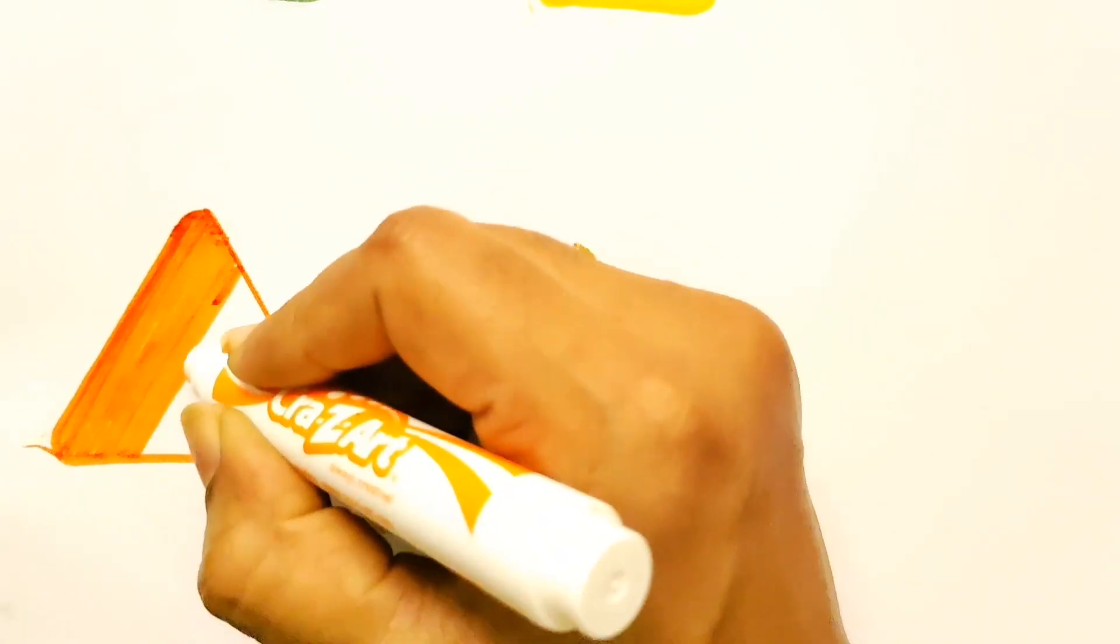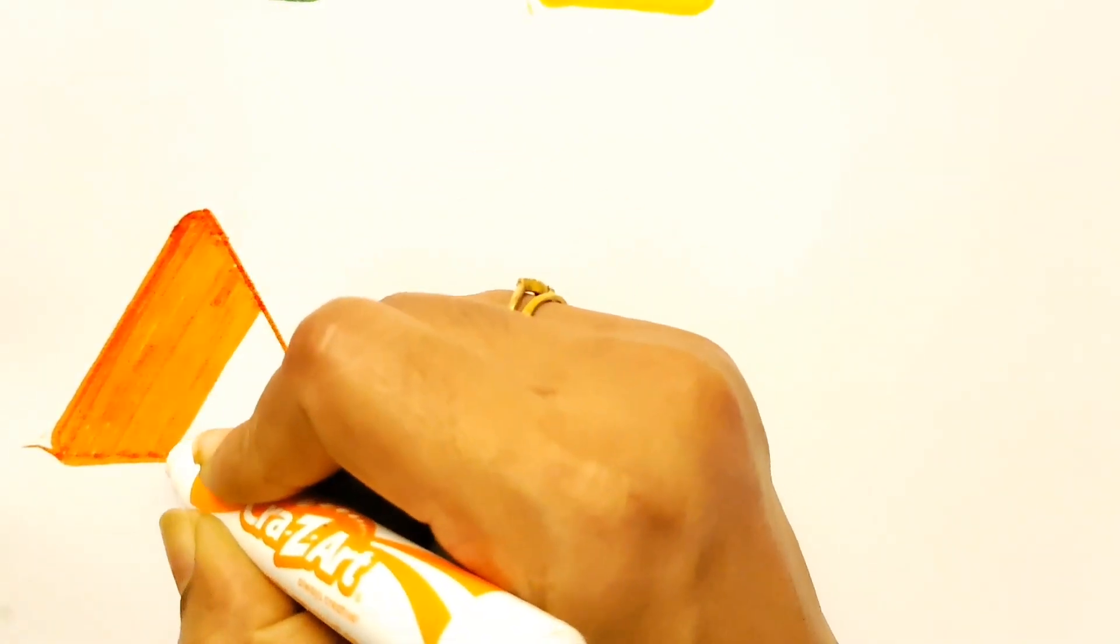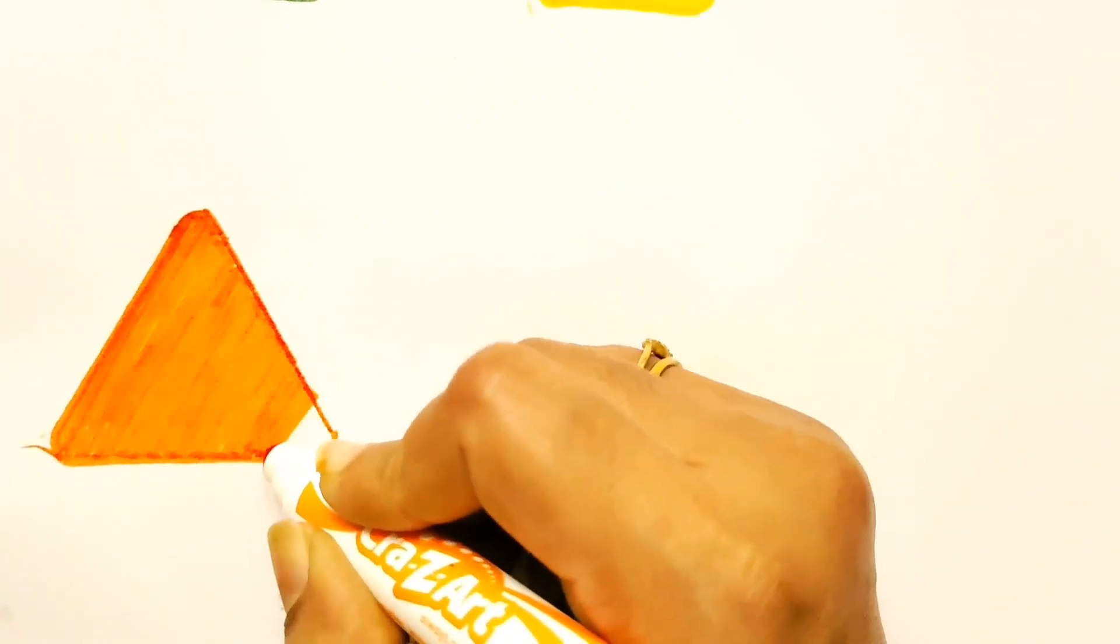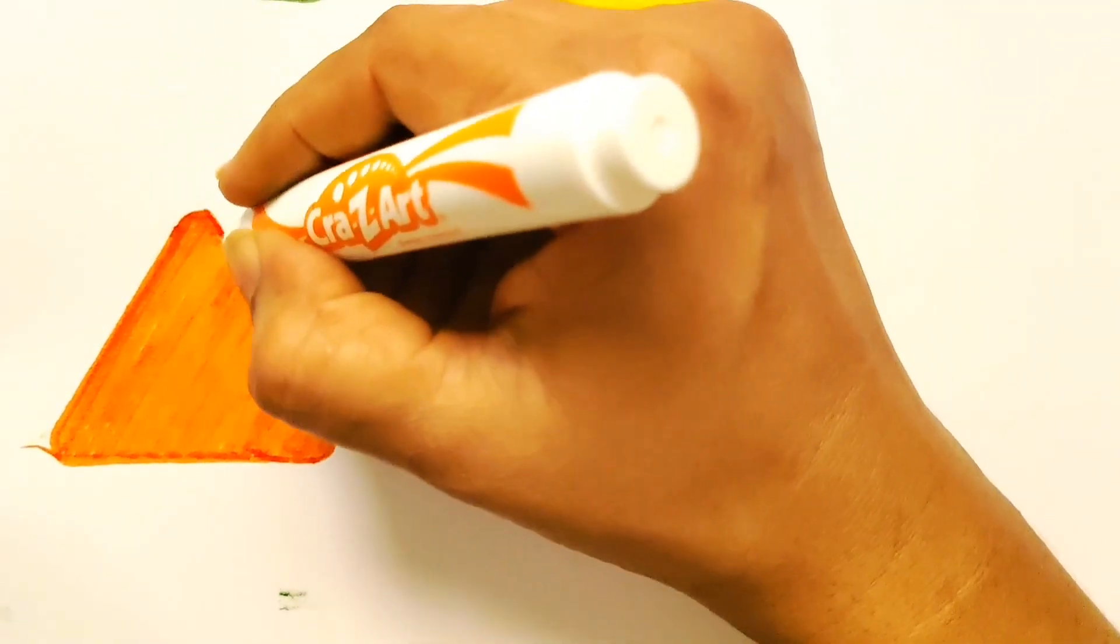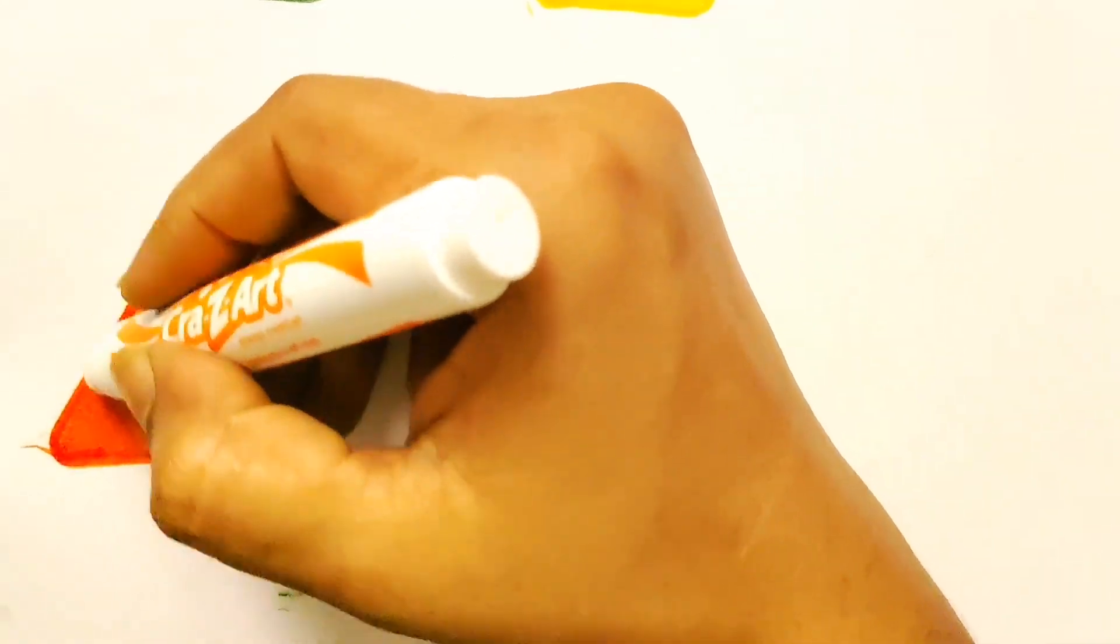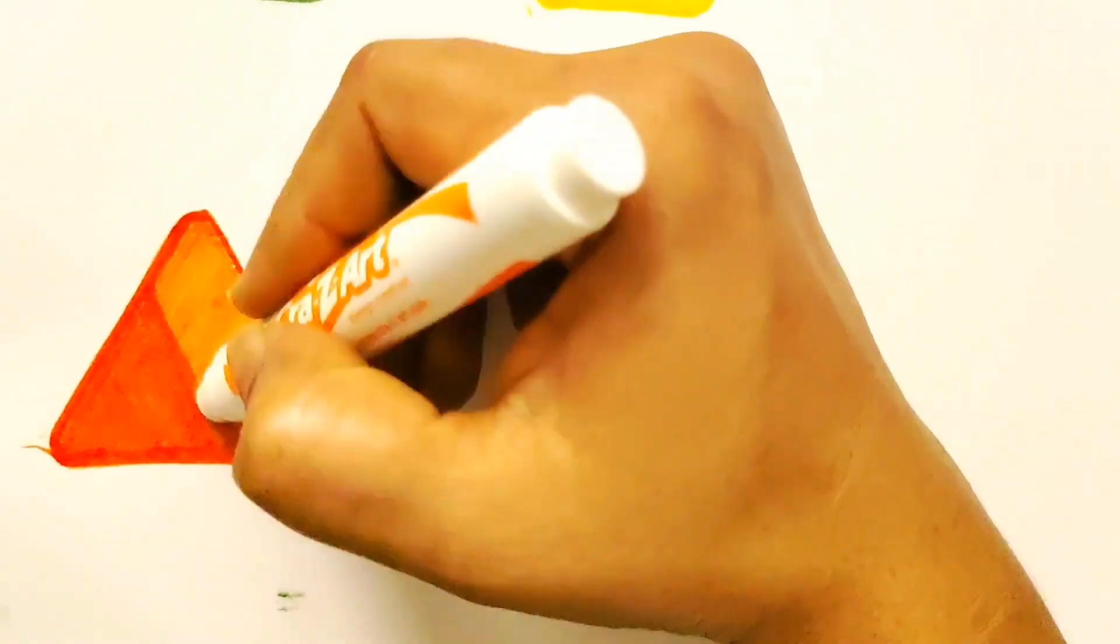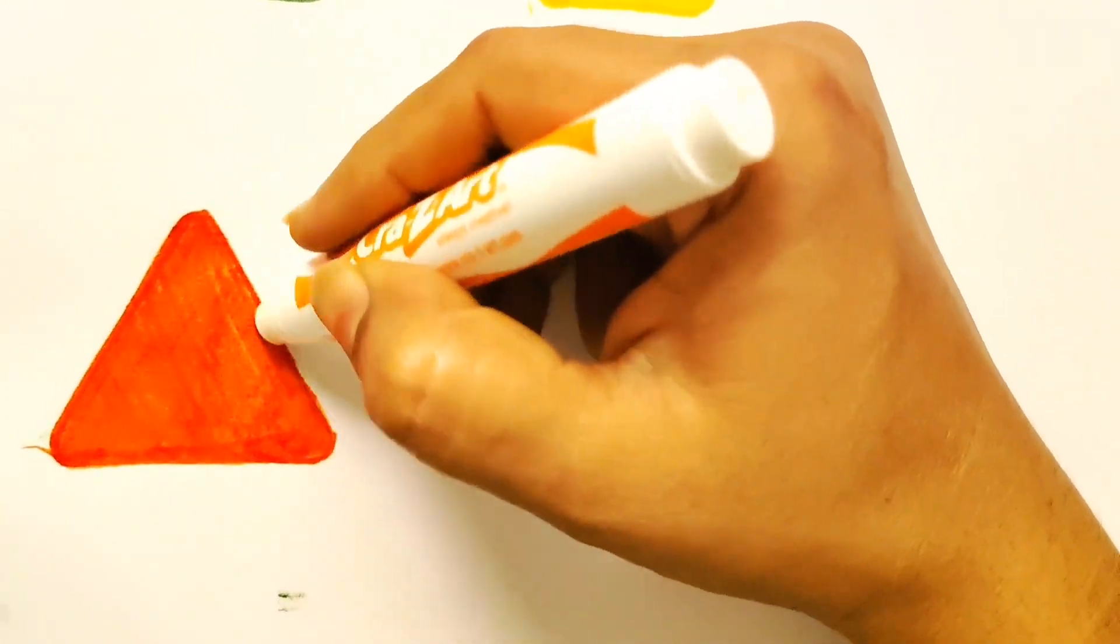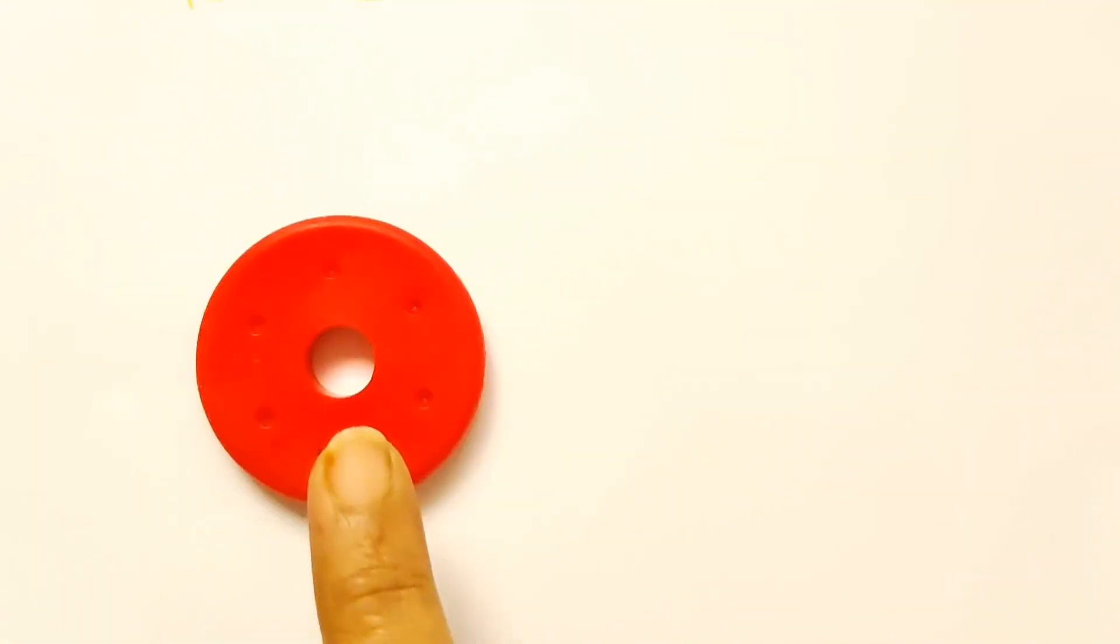Yes, coloring the triangle in orange color. My triangle is ready, but I want to color its border. Yes, now again I will make it a darker shade. My triangle in orange color is almost ready. Wow, orange color.